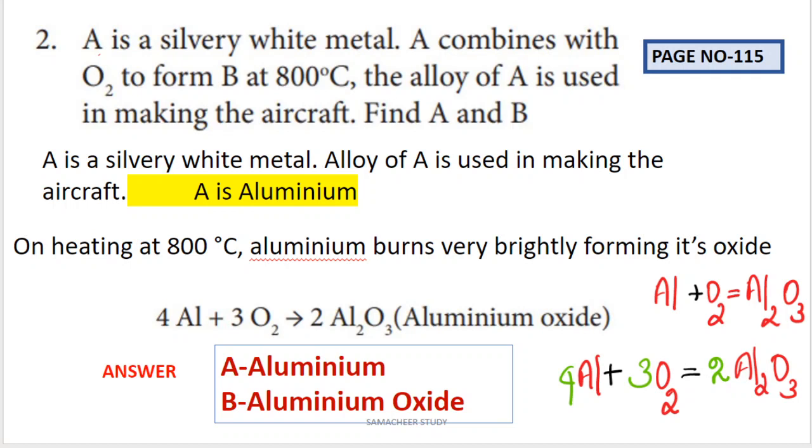This aluminum combines with oxygen. Al plus O2 is aluminum oxide. A is aluminum, B is aluminum oxide. So this is an expression: Al plus O2 equals Al2O3 is aluminum oxide. Now we have to balance this. Here we have three oxygen and two oxygen. So three and two, to balance this we add two. So oxygen balance: 4Al plus 3O2 equals 2Al2O3. So this is the expression. It is very simple. A is aluminum, B is aluminum oxide. This is the answer.